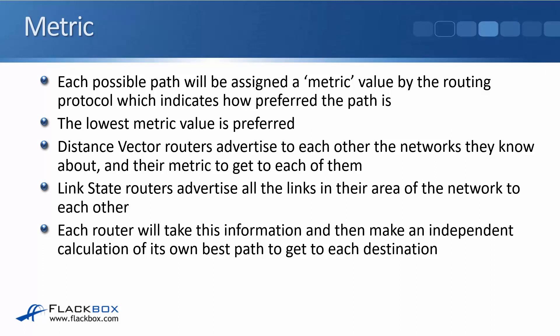Remember, the lower the cost or the lower the metric, the more preferred the path is going to be. Distance vector routers advertise to each other the networks that they know about and their metric to get to each of them. Link state routers advertise all the links in the area of the network to each other, and each router will take that information and then use it to make an independent calculation of its own best path to get to each destination.